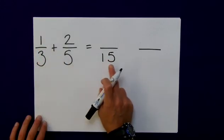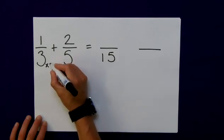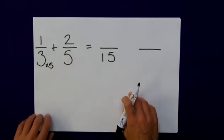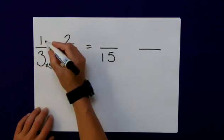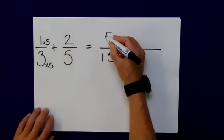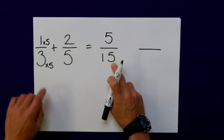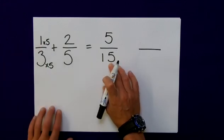So, how do I change this into an equivalent fraction of fifteenths? Well, I say to myself, what have I done to the 3 to get 15? Well, I multiplied it by 5. In order to have an equivalent fraction, I must do the same to the numerator. 1 times 5 is 5. 5 fifteenths is the equivalent fraction of 1 third, so I've not changed how much I've got.